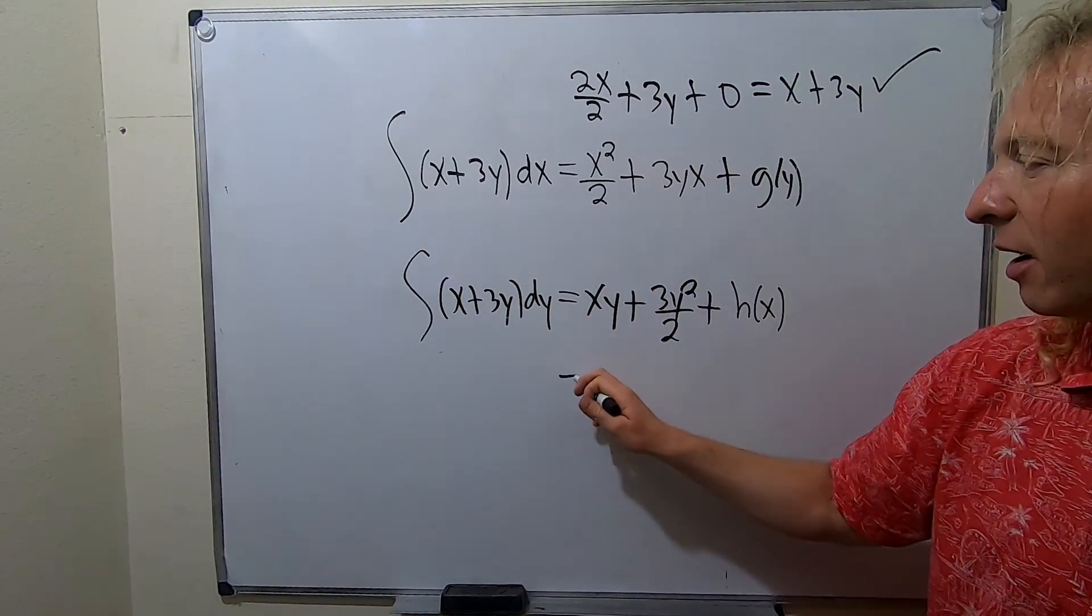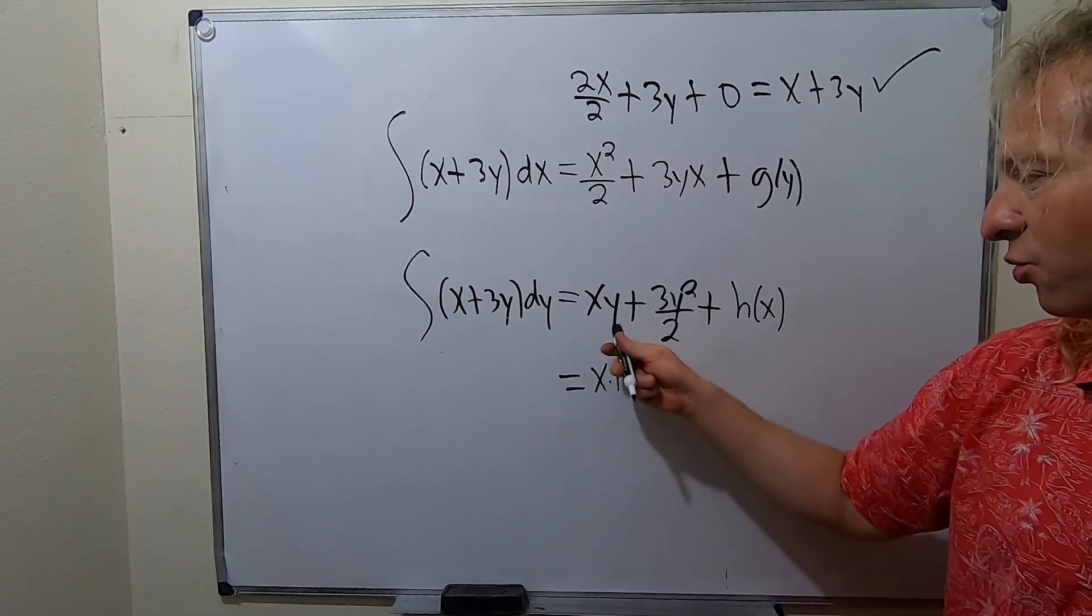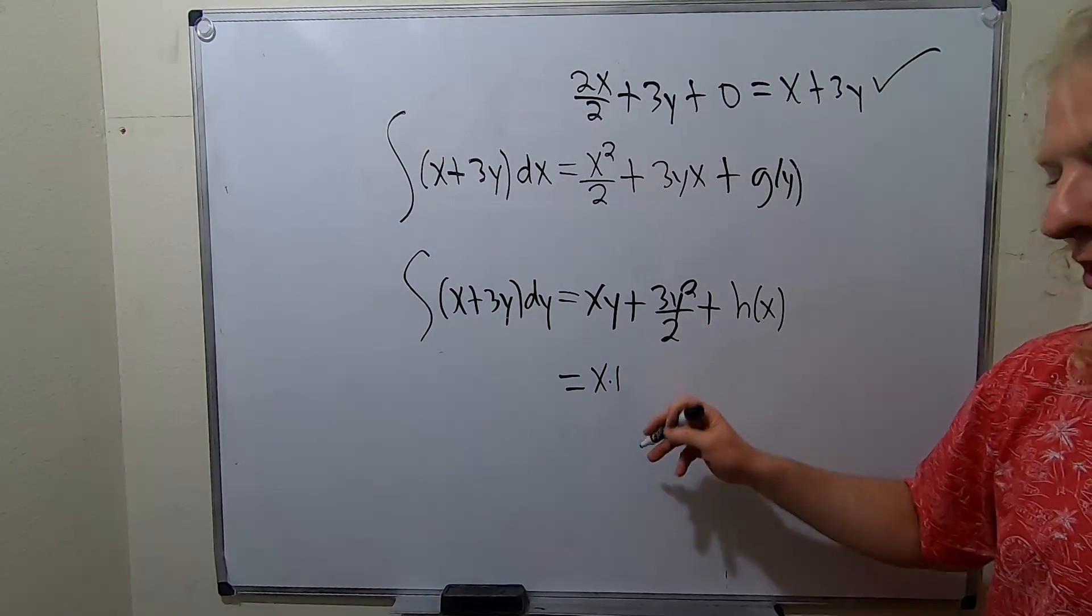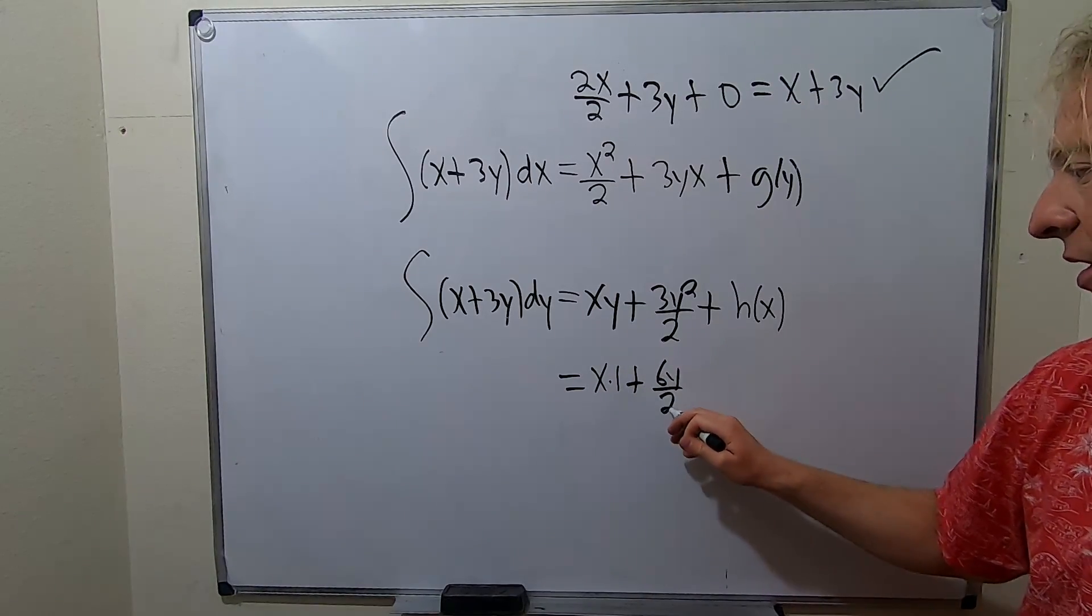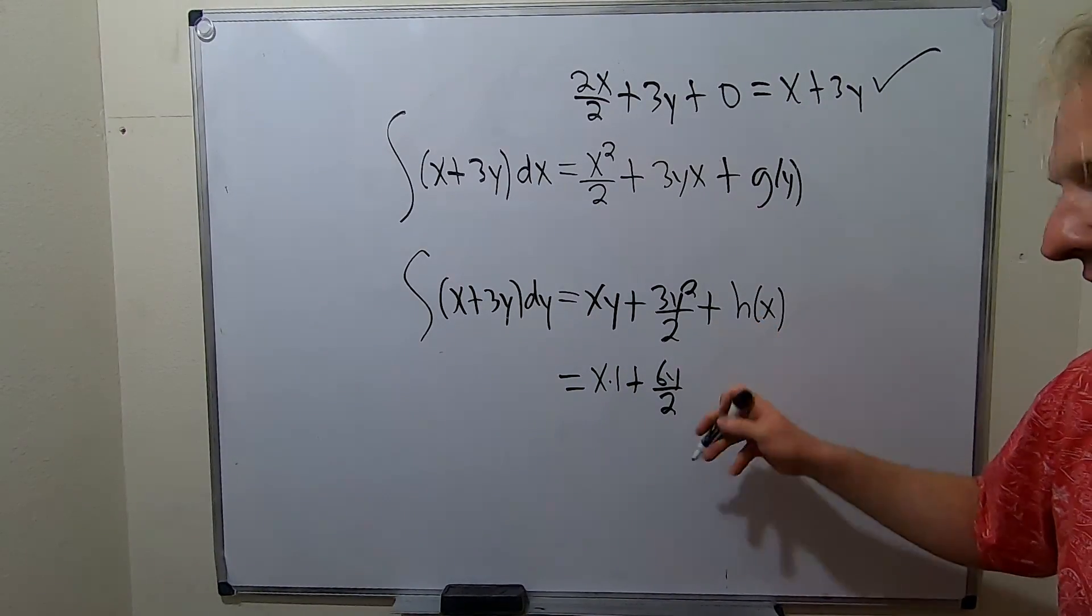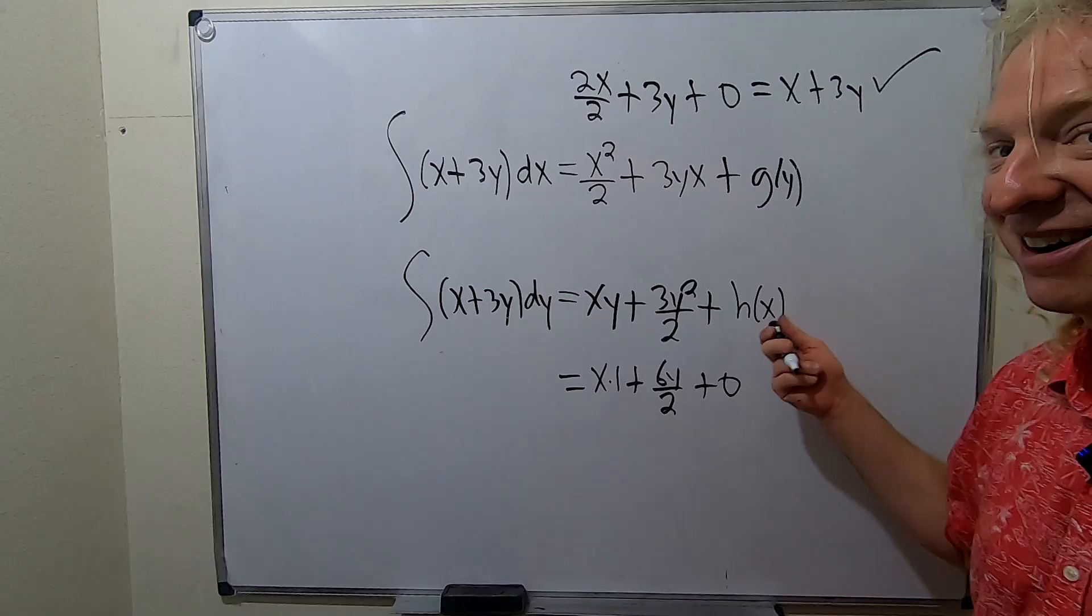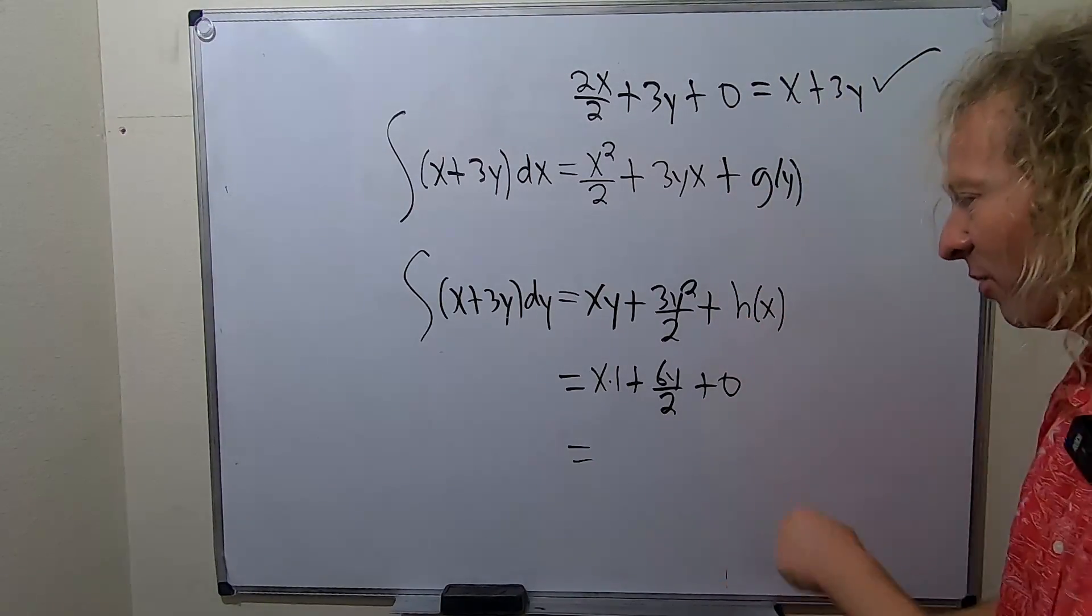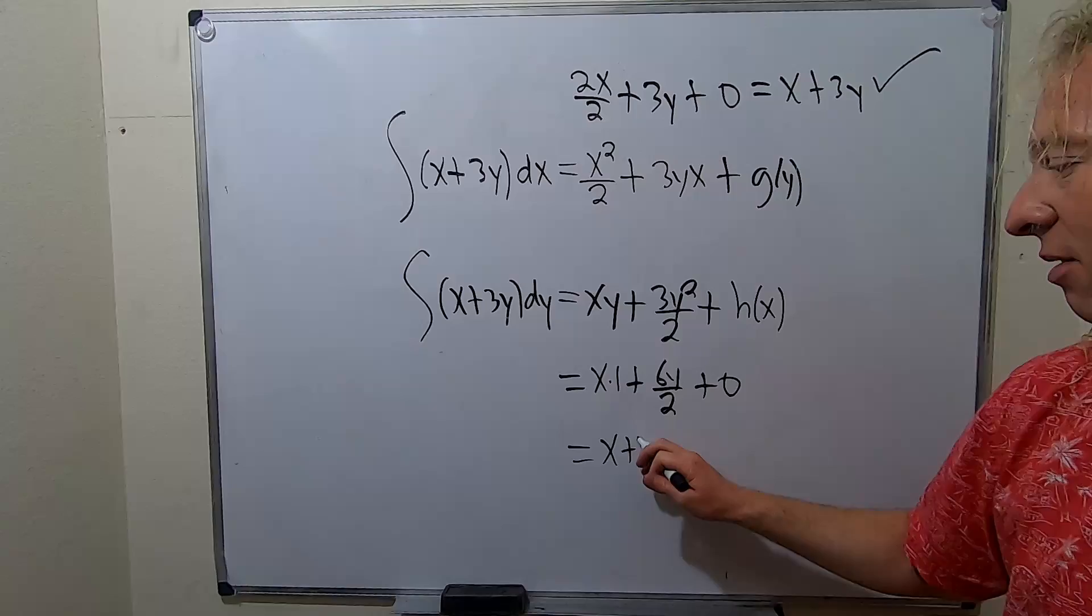Differentiating with respect to y, we get x times 1, because that's the derivative of y. And then differentiating here, we get plus 6y over 2. Differentiating here with respect to y, we get 0, because it's a constant. Well, it's a function of x, and so we treat it as a constant, so it goes away. So we get x plus 3y.